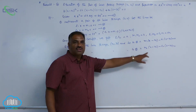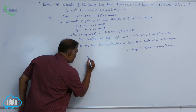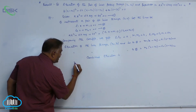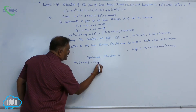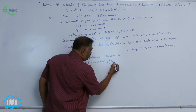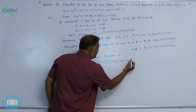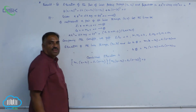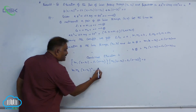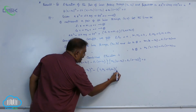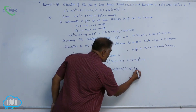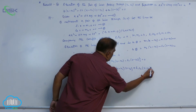We require the combined equation, so we multiply the two perpendicular line equations. The combined equation is [m₁(x - x₀) - l₁(y - y₀)][m₂(x - x₀) - l₂(y - y₀)] = 0, which expands to m₁m₂(x - x₀)² - (l₁m₂ + l₂m₁)(x - x₀)(y - y₀) + l₁l₂(y - y₀)² = 0.